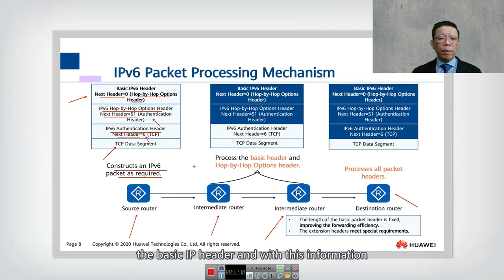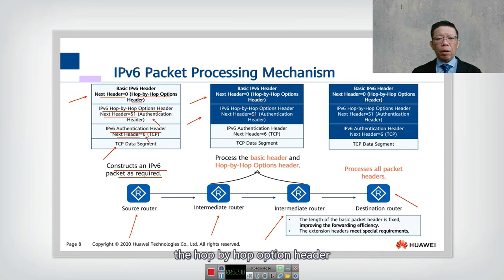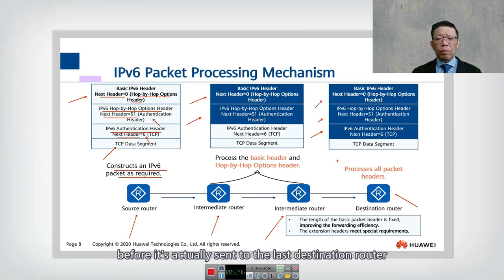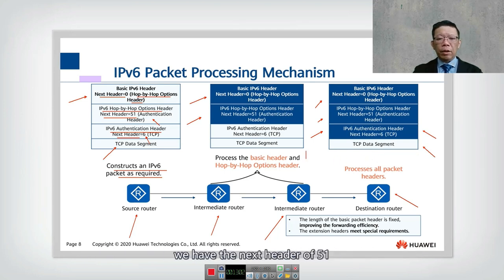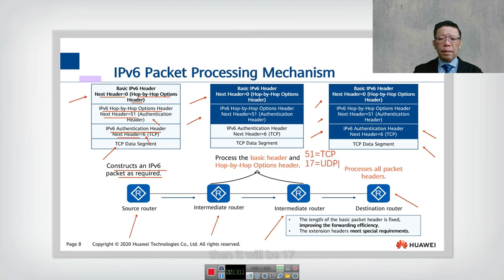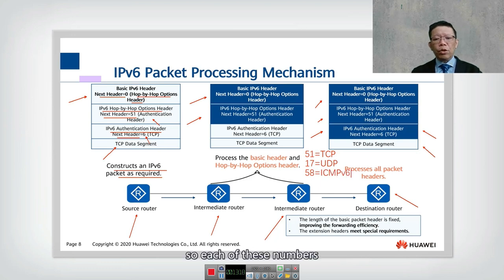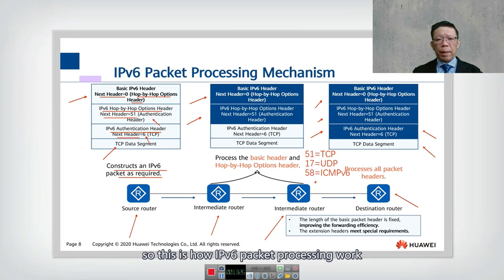The intermediate routers read both the basic IP header and the hop-by-hop option header with value 51. The destination router reads all headers including the layer 4 TCP information. When the packet reaches the server, it reads all the data. The next header value 51 equals authentication header, value 6 equals TCP, value 17 equals UDP, and value 58 equals ICMPv6. Each number represents specific information for the next header, and this is how IPv6 packet processing works.